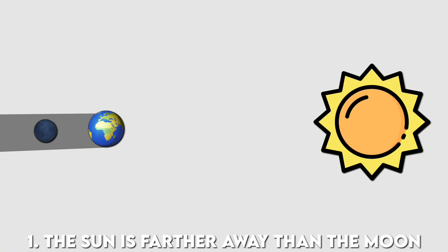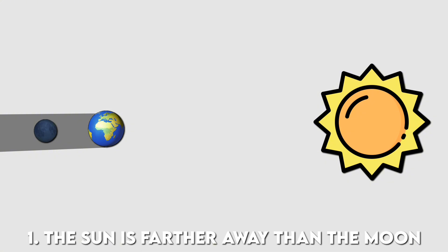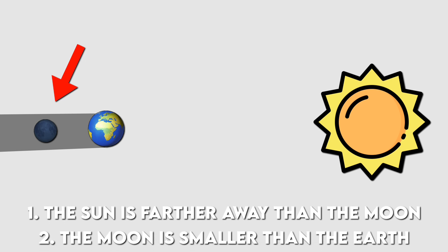At that time, it was already known that a solar eclipse occurred when the moon passed between the Earth and the sun, while a lunar eclipse happened when the moon moved into the Earth's shadow. From this, Aristarchus deduced two very important facts. Since the moon moves between the Earth and the sun, the sun must be farther away than the moon. Since the moon disappears into the Earth's shadow, the moon must be smaller than the Earth.